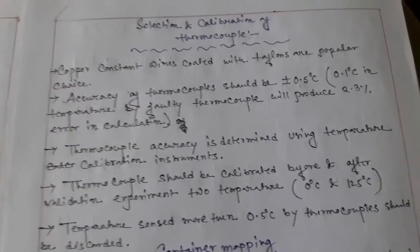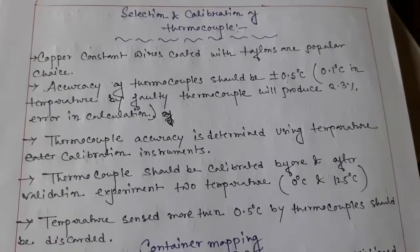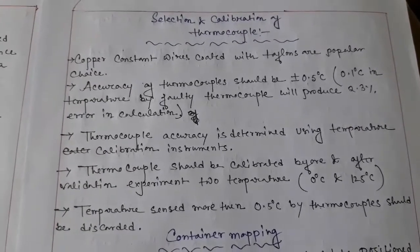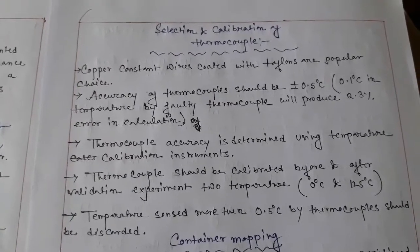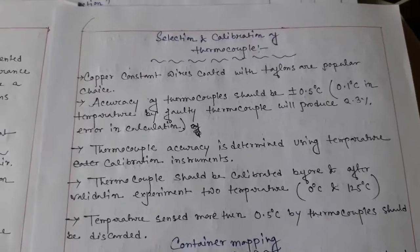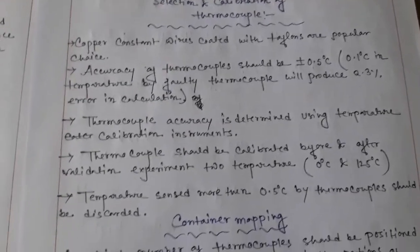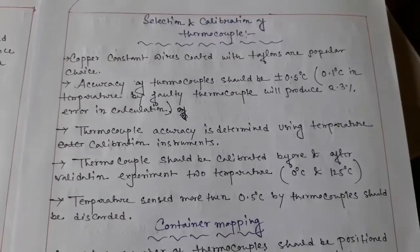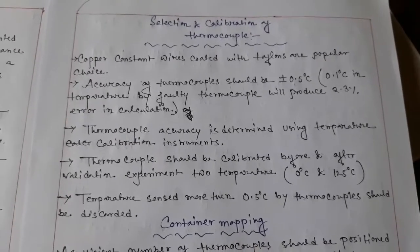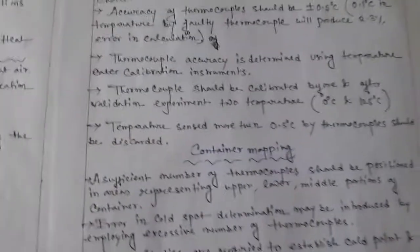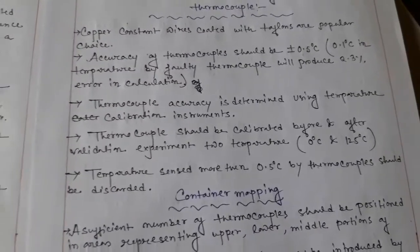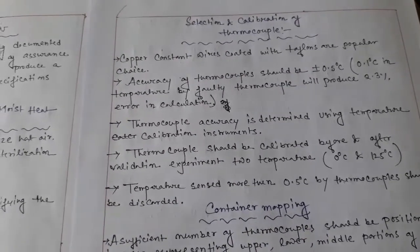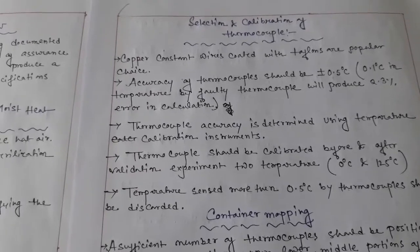Thermocouple accuracy is determined using temperature calibration instruments. Thermocouples should be calibrated before and after the validation experiment at two temperatures: 0 degrees centigrade and 125 degrees centigrade. Any temperature difference of more than ±0.5 degrees centigrade shown by a thermocouple should be discarded. These points must be followed for the validation of the autoclave.